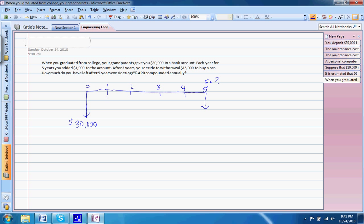In each of those years, we invest $1,000. And then in the third year, we withdraw $15,000 for our new car.